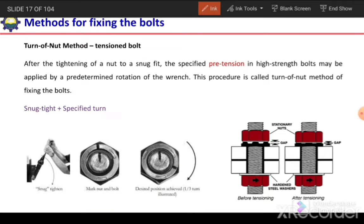Next is the turn-of-nut method. This is used for tension bolts. After tightening a nut to a snug tight fit, the specified pre-tension in high strength bolts may be applied by predetermined rotation of the wrench. This procedure is called the turn-of-nut method.